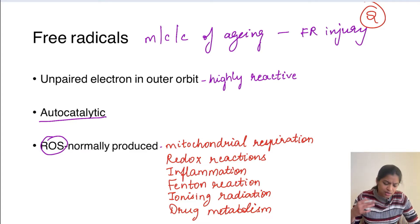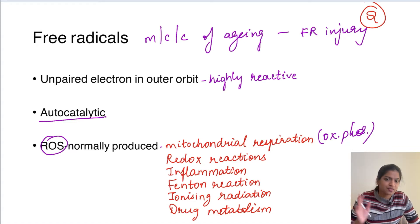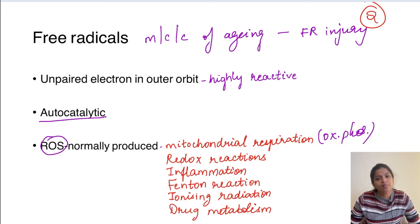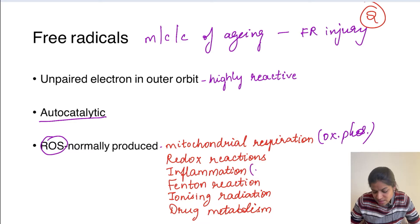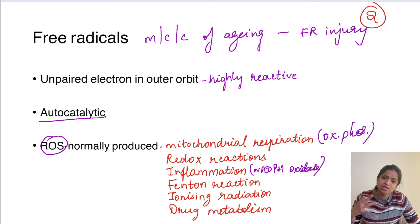Free radicals are produced during normal mitochondrial respiration like oxidative phosphorylation. Whenever there is incomplete oxidation, it results in the formation of ROS - reactive oxygen species. The same applies to other redox reactions. In inflammation, neutrophils or macrophages produce NADPH oxidase as the final step, which is important in the killing of organisms.